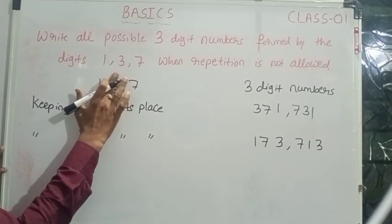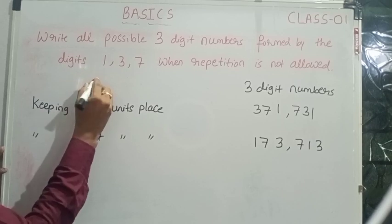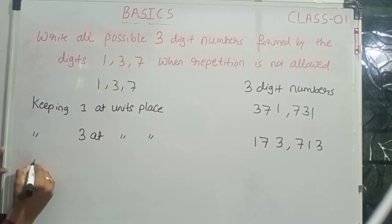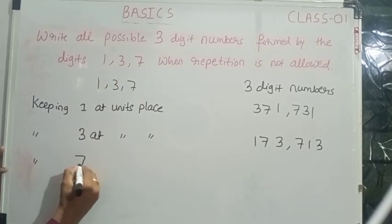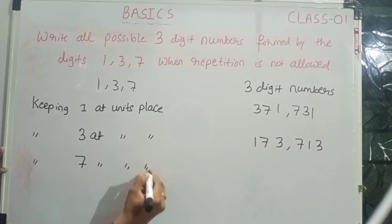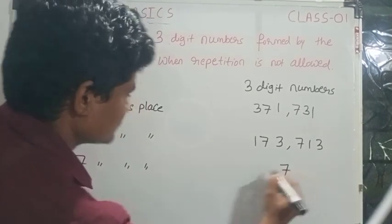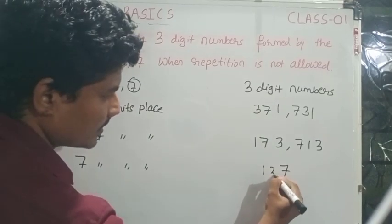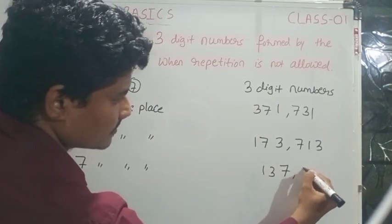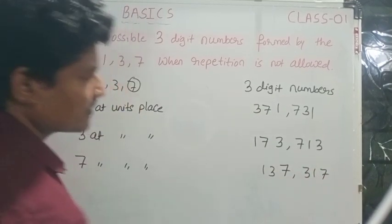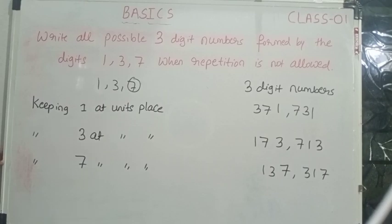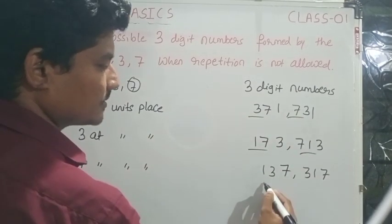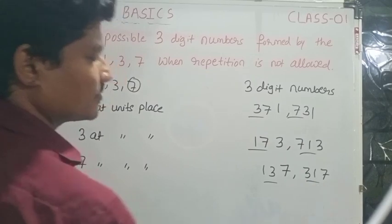Now, keeping 7 at the unit's place, we get 137 and 317. These are all the possible 3-digit numbers when repetition is not allowed.